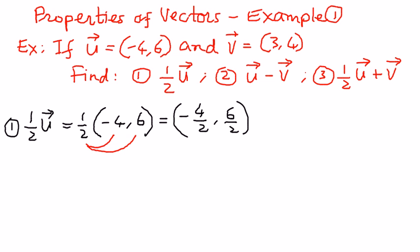4 is a multiple of 2, therefore we can simplify that as negative 2. And 6 is a multiple of 2, therefore it simplifies to 3. So negative 2 comma 3 is the way we can represent one-half of vector u. We can also represent this in a graphical way, and we will do that right now.